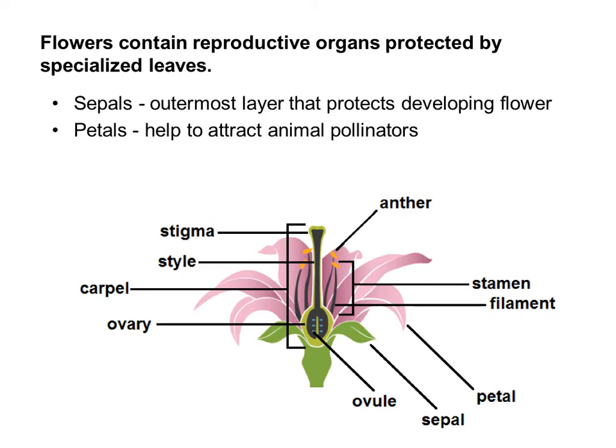The first two parts are the sepals and the petals, which can sometimes be confused. Sepals are the outermost layer that protects a developing flower — that outer layer you see on a flower bud before it has bloomed. Sometimes they are green and tiny; other times they look like actual petals, depending on the flower. Petals are more on the inside, and their job is to attract animal pollinators, which is why they are colorful.